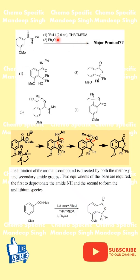The first equivalent of butyllithium abstracts the proton from the nitrogen NH, because it is more acidic. The second proton undergoes abstraction ortho to the methoxy group, and that happens because of the ortho-directing nature of not only the methoxy group but also the amide.